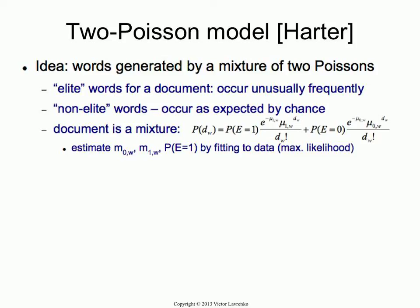Then you have non-elite words — that's your linguistic glue. Those are your stop words: the 'ofs,' the 'ands,' and the 'does,' and they occur as expected by chance. The document as a whole is a mixture of the two Poissons — the elite Poisson and the non-elite Poisson conditioned on the eliteness variable. You have an extra parameter for determining the amount of mixing between the two Poissons.